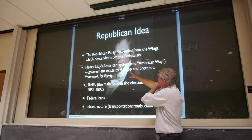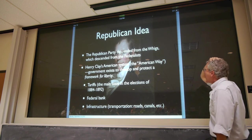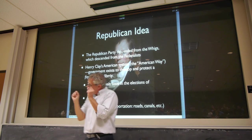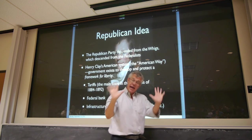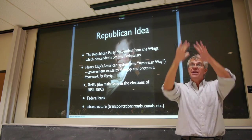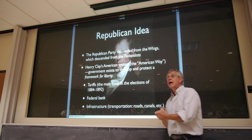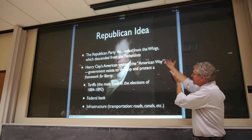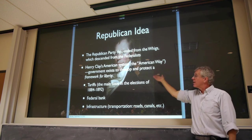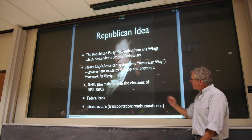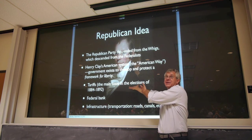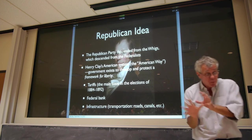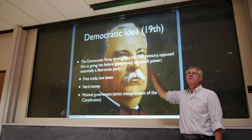The Republican Party's idea throughout the 19th century was something you might describe as the American System — that was Henry Clay's name for it. The thought is government exists to develop and protect a framework for liberty. The government should primarily protect your rights, but your freedoms can be developed only within a certain structure that maximizes opportunities for liberty. So it's okay for the government to do things to create that structure. Republicans were in favor of a central federal bank, canals, roads, infrastructure expenditures, and tariffs — which was the main way the government raised taxes in those days.